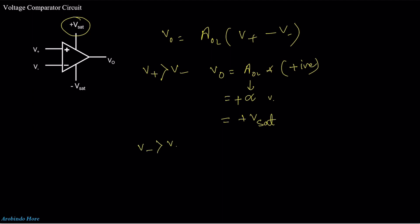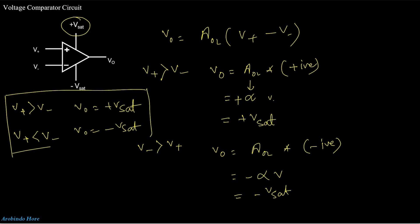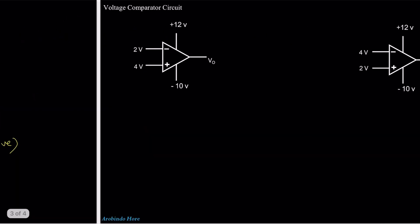When V-minus is greater than V-plus, V0 = Aol × (negative value), giving minus infinite volts. Since we can't get minus infinite voltage, the output will be minus V-sat. So: if V-plus > V-minus, then V0 = +V-sat; and if V-plus < V-minus, then V0 = −V-sat. This is how the op-amp works as a comparator.